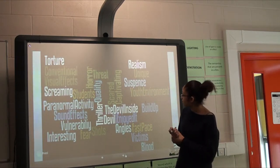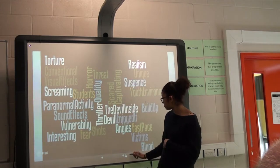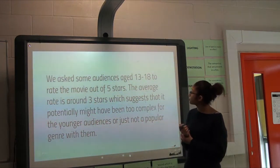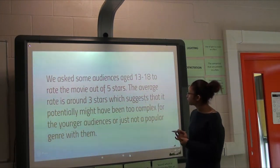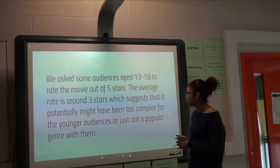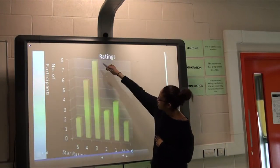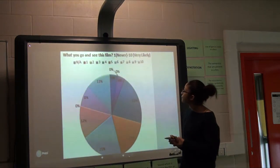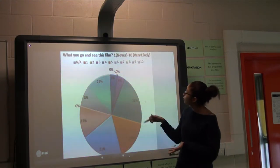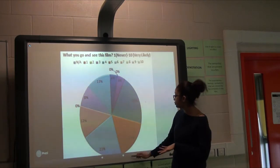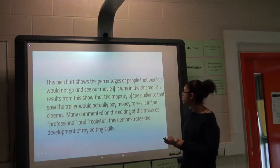Other responses included torture, conventions, students, The Devil Inside, and fast-paced. We asked audiences aged 13 to 18 to rate the movie out of five; the average was around three stars, which suggests it might have been too complex for younger audiences or just not a popular genre with them. The majority from six upwards on a likelihood scale said they would go and see the film.